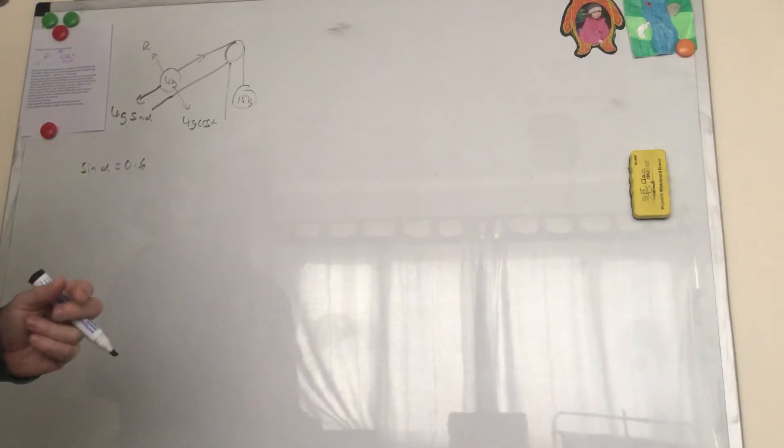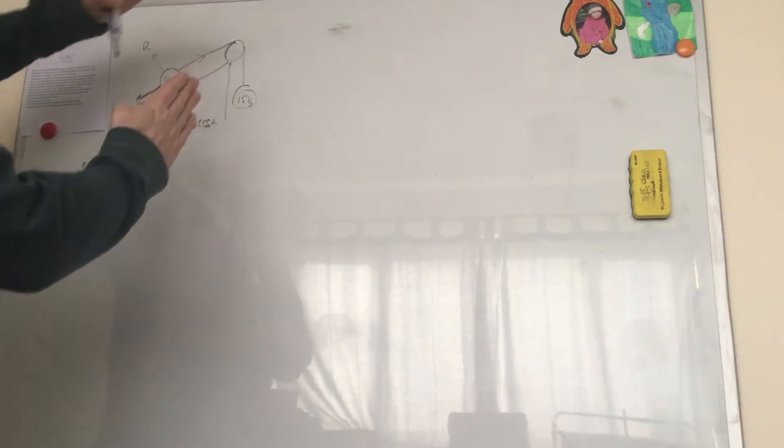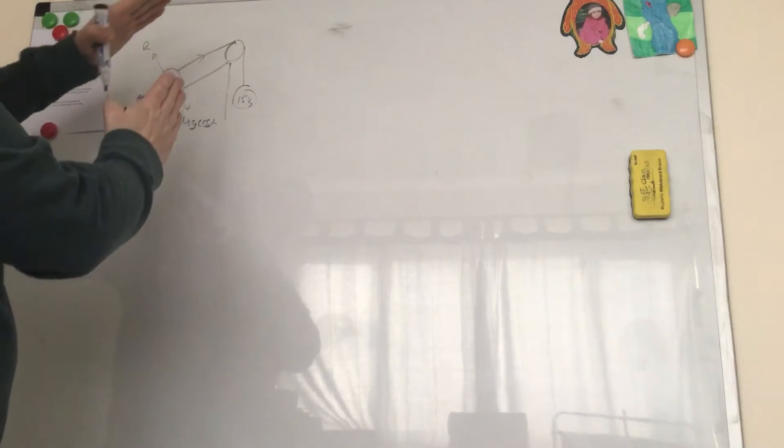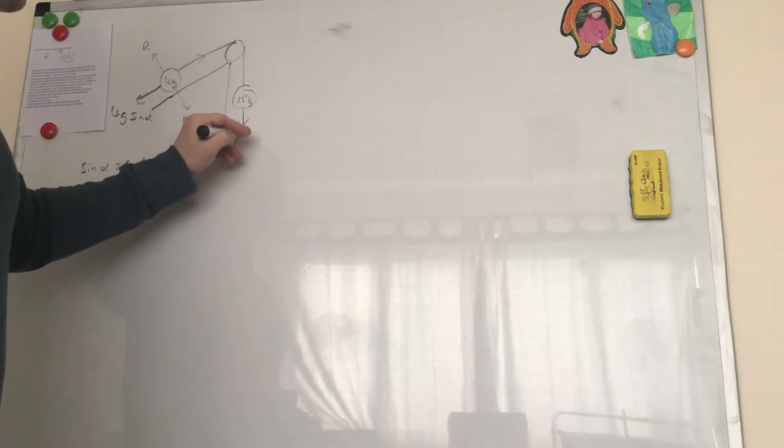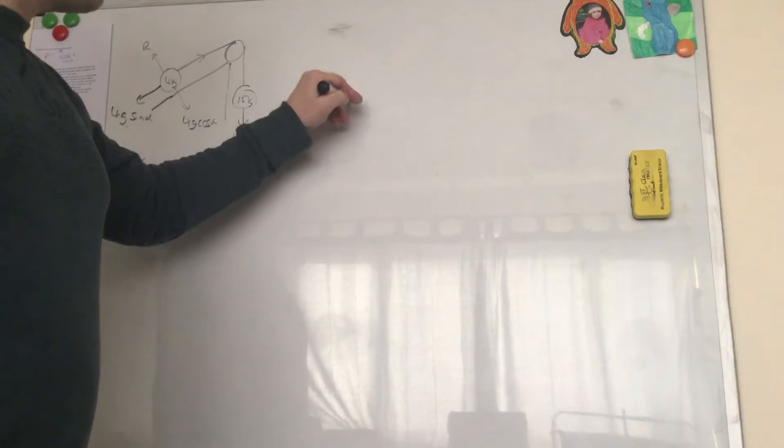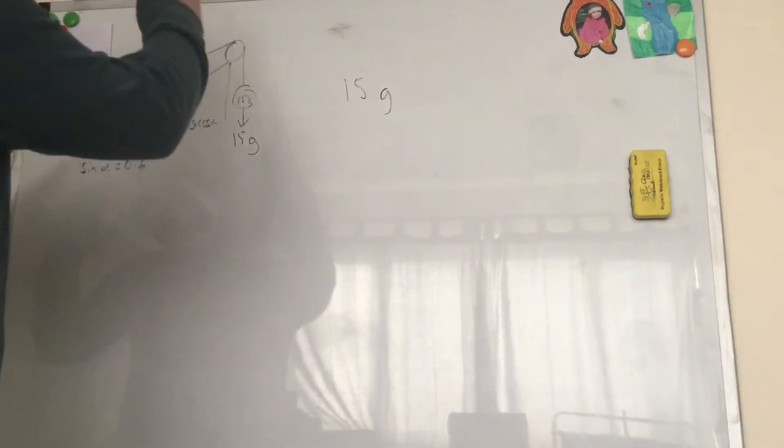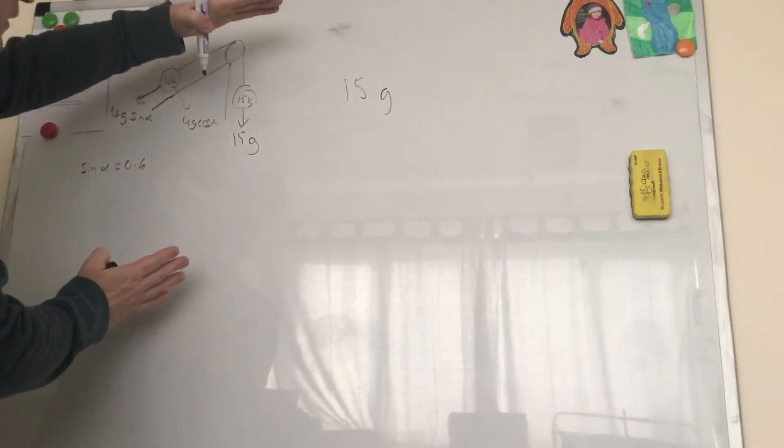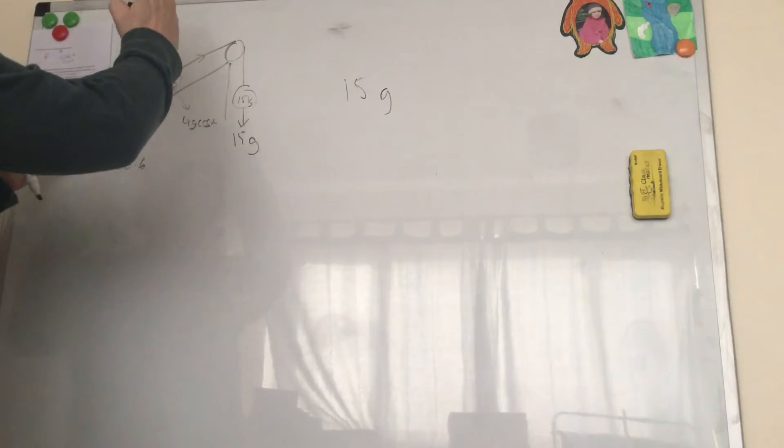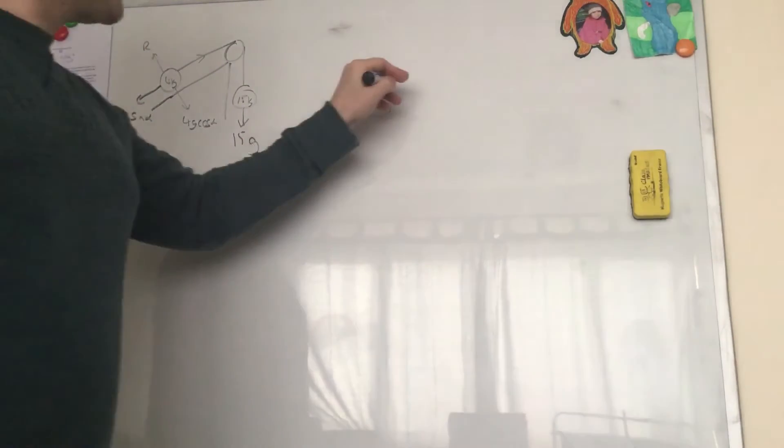We get told that sine alpha equals 0.6 or three-fifths. So what a lot of you did, which I thought was brilliant because I've never used this approach before, is take the whole thing as moving that way and we're saying okay, what are the forces that are causing it to move that way? The force that's causing it to move that way in the whole system is this 15g there. So we're saying that's 15g and that must be bigger than anything that's causing it to not move that way, so any force is acting that way which is that 4G sine alpha.